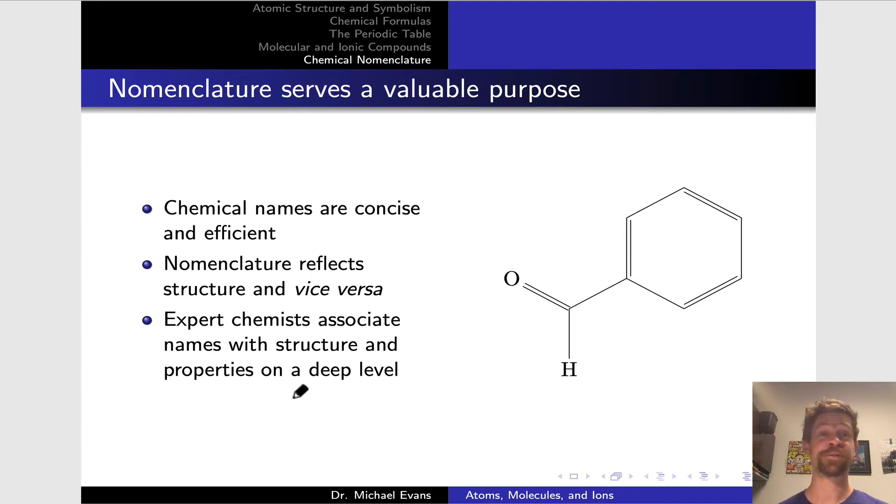All right, so to this point we've surveyed element structure, compound structure, the periodic table, and talked about the nature of compounds on the submicroscopic level in terms of molecular versus ionic compounds. We're going to end this unit by talking about chemical nomenclature.